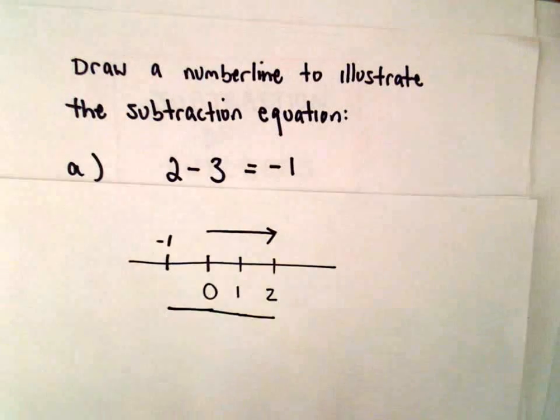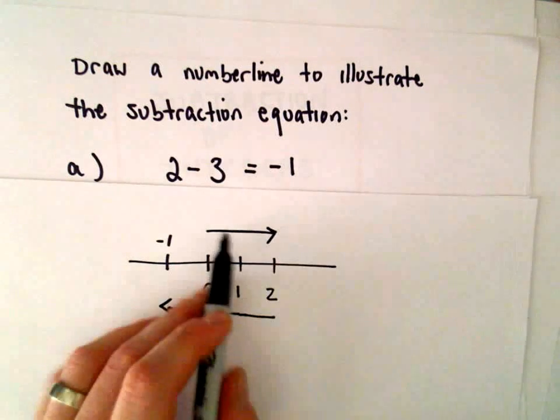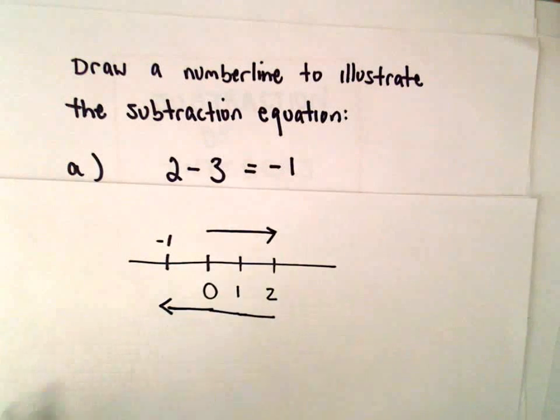if we subtract 3 units, we'll end up at the value of negative 1. So that could be our number line. 2 to the right, 3 to the left.